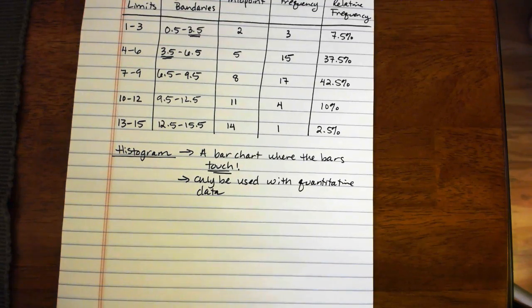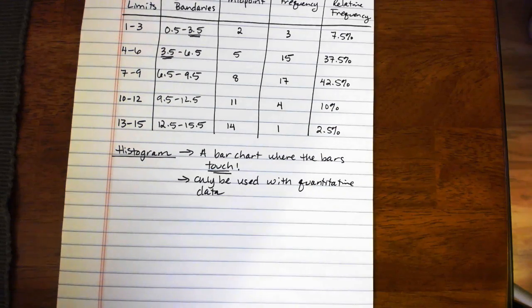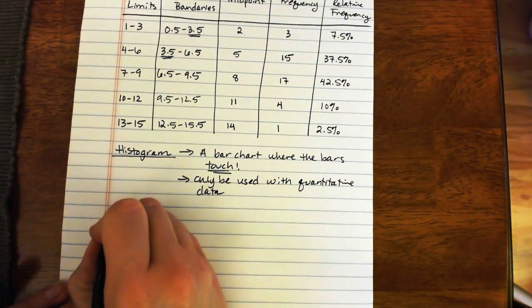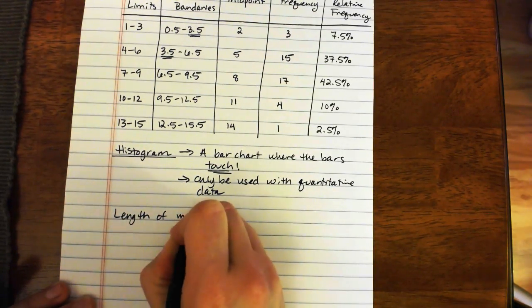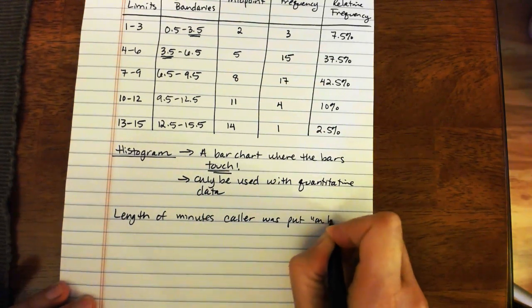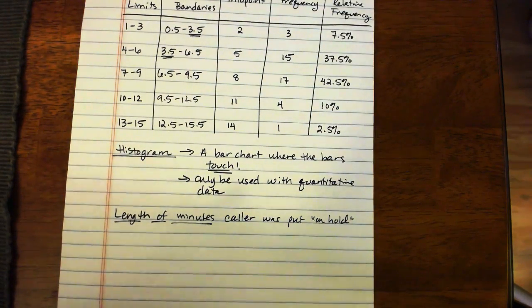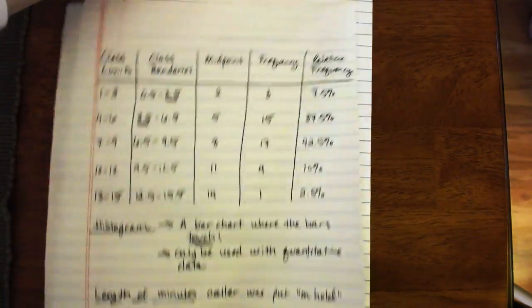Now, this data happened to be quantitative. This was looking at length of time being put on hold. So these 40 pieces of data above was length of minutes collar was put on hold. So we can see that length of minutes, that definitely qualifies as quantitative data, so we're going to create a histogram for that.